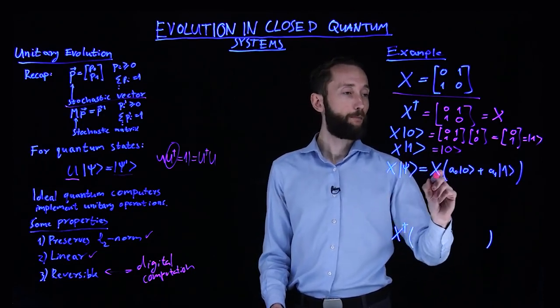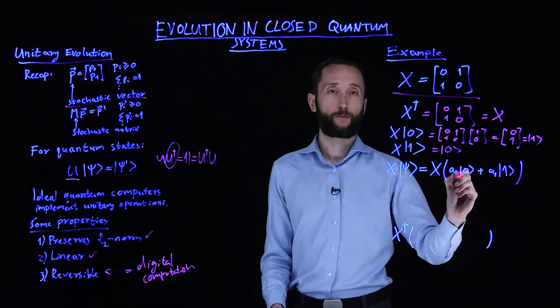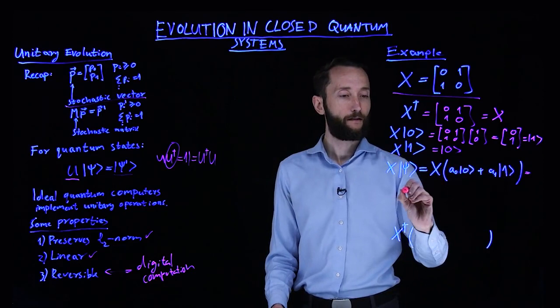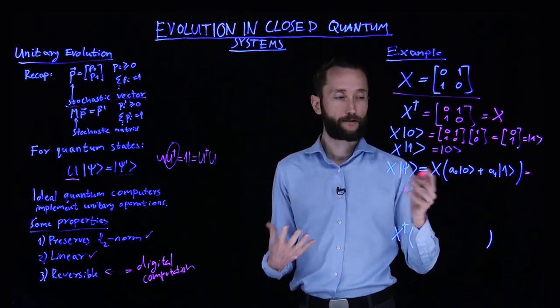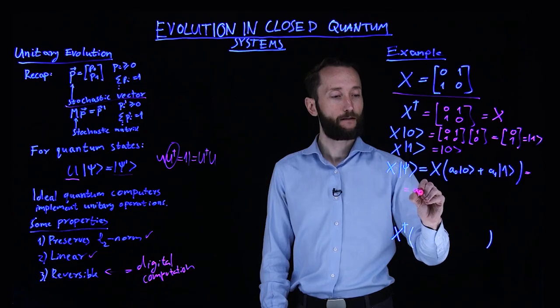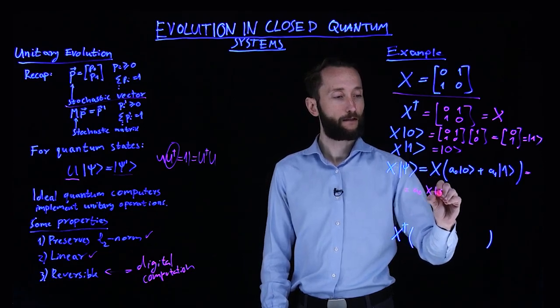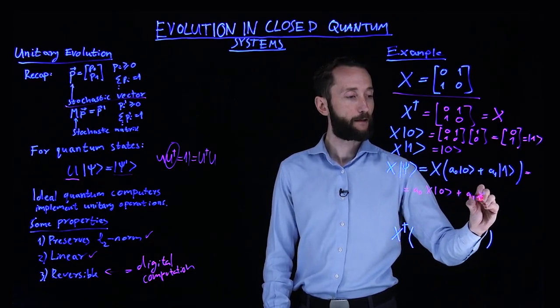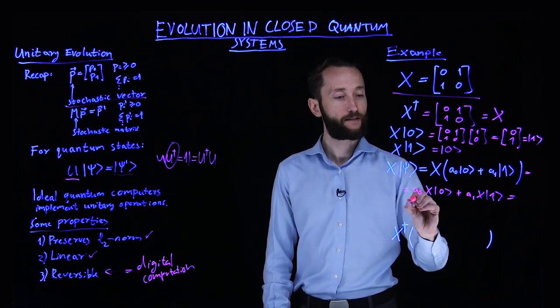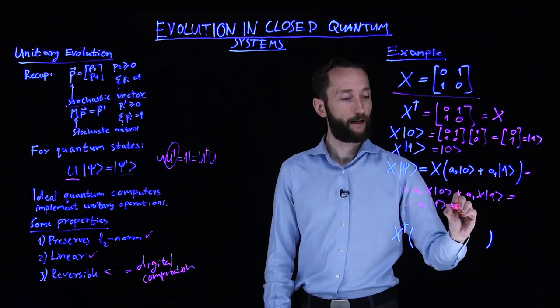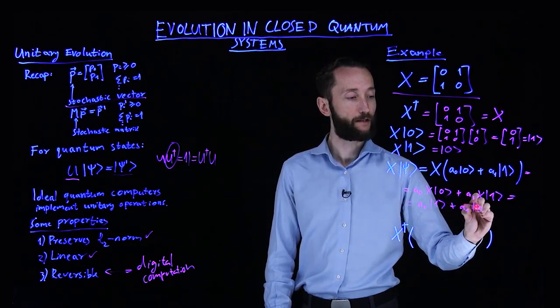Now, when you apply it to a generic quantum state, which is a superposition of the two basis vectors, then since it's linear, it's going to distribute to the individual elements of the qubit. So you will have X applied to the zero ket, and then X applied to the one ket. In other words, you just have a null times the one ket and a one times the zero ket.